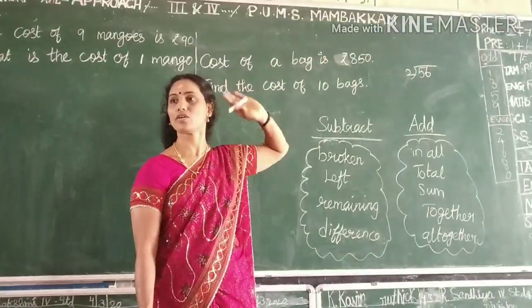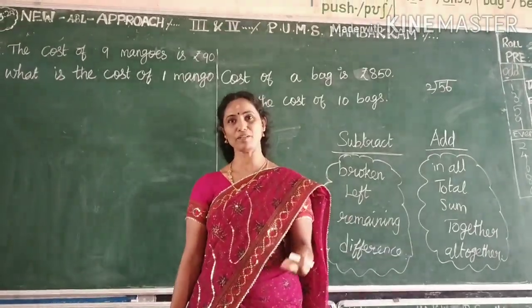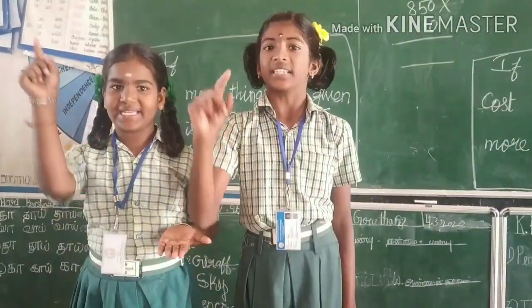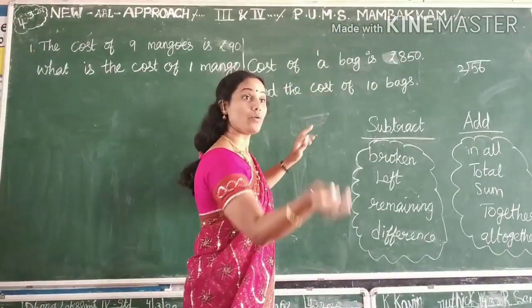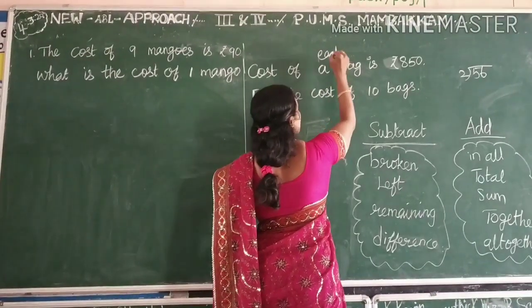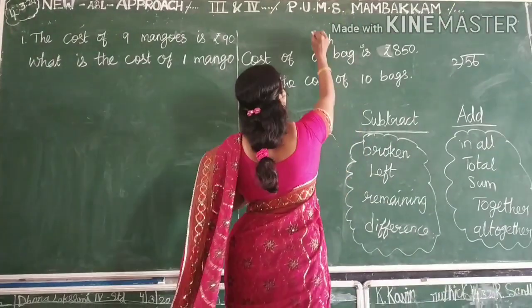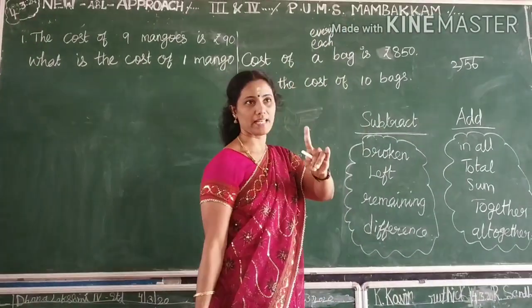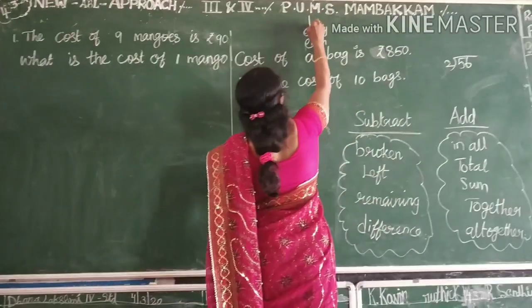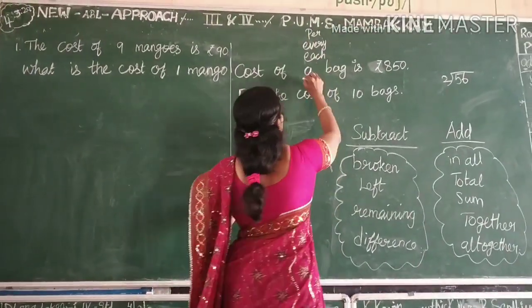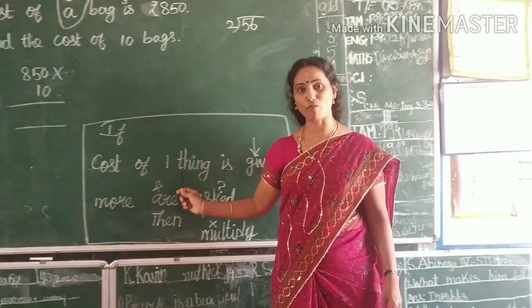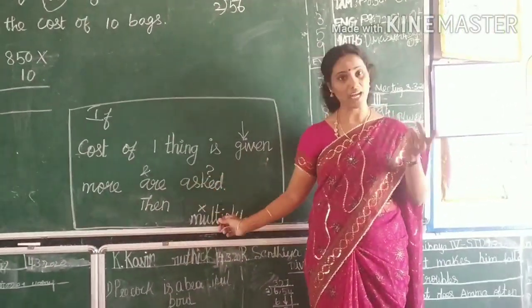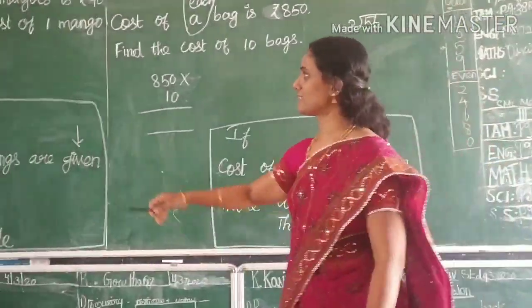For multiplication or division, there is one simple trick. Keywords like 'one', 'each', and 'every' indicate that one thing is being referred to. If the cost of one thing is given and more are asked, then it's multiplication.